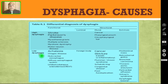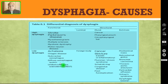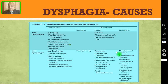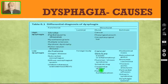Coming to low dysphagia, the functional causes are all the motility disorders like achalasia cardia, Chagas disease, nutcracker esophagus, diffuse esophageal spasm, and limited cutaneous scleroderma. The structural causes may be luminal — the main cause is foreign body obstruction — or mural: carcinoma of the esophagus, stricture, Plummer-Vinson syndrome, Schatzki's ring, congenital esophageal atresia, and post-fundoplication, especially if the fundoplication is very tight.